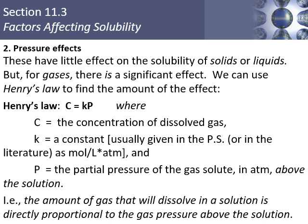Henry's Law states that the concentration of a gas dissolved in a liquid (C) equals the Henry's Law constant (k) times the pressure of the gas above the liquid (P): C = kP. The concentration is in moles per liter, pressure in atmospheres, so the constant's units account for those. Higher pressure means more gas dissolves.